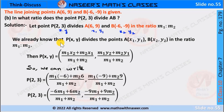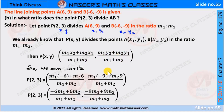We already know that P divides points A(X1,Y1) and B(X2,Y2) in the ratio M1 is to M2. Then the section formula is given by P(X,Y) = (M1·X2 + M2·X1) / (M1 + M2), comma (M1·Y2 + M2·Y1) / (M1 + M2). So after substituting the values, we can write P(2,3) = (M1·(−6) + M2·6) / (M1 + M2),